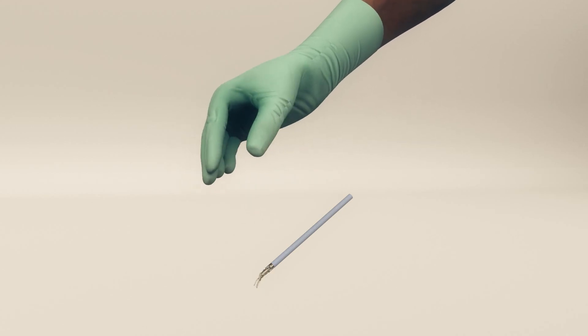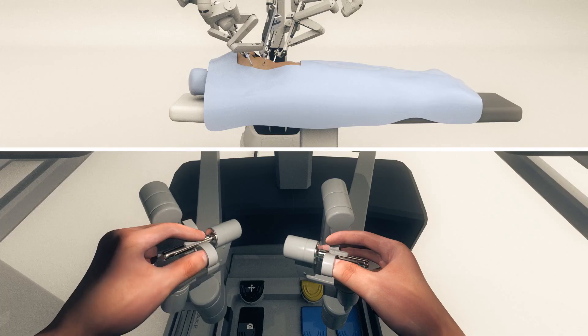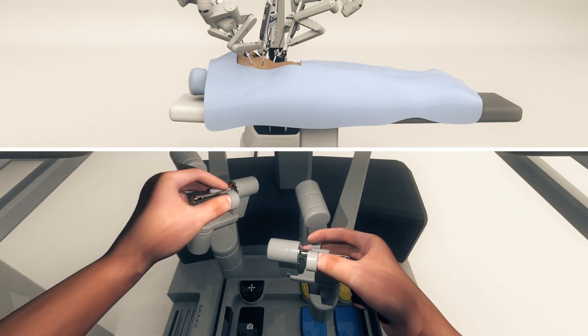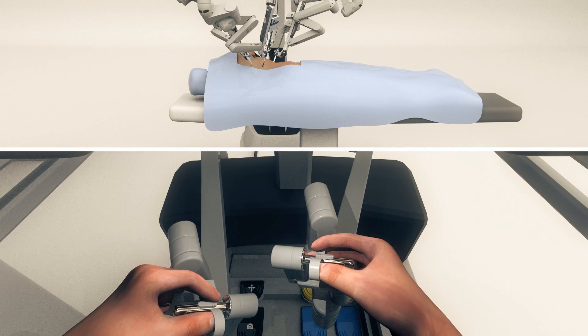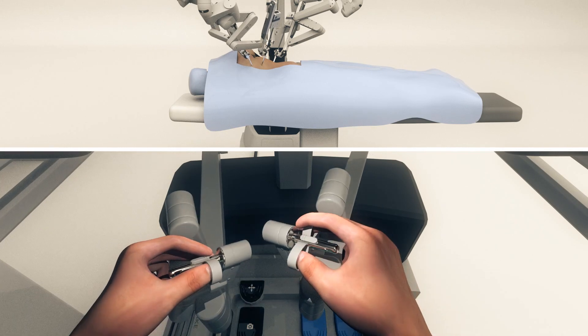In order to control the instruments, the surgeon sits at a console positioned next to the patient in the operating table. The surgeon controls the robot's arms and camera using a combination of hand controls and foot pedals.